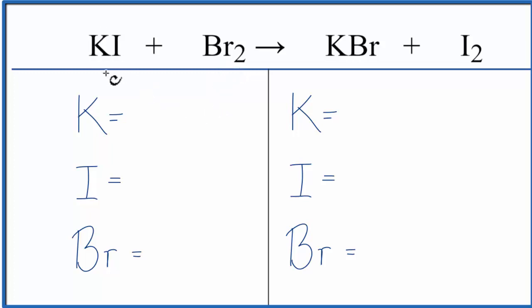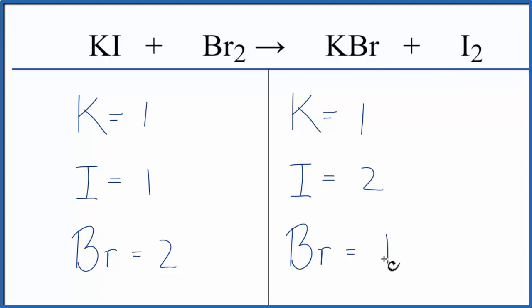Let's count the atoms up. We have one potassium, one iodine, and then two of these bromines here. On the product side, we have one potassium, two iodines, and then one bromine.